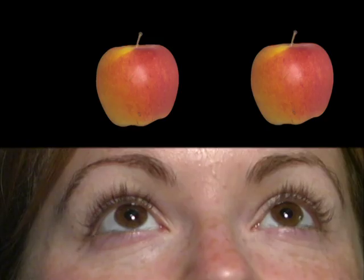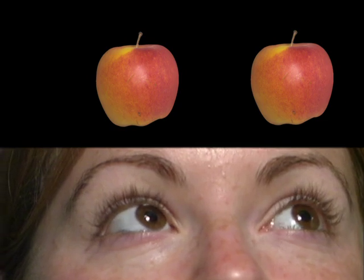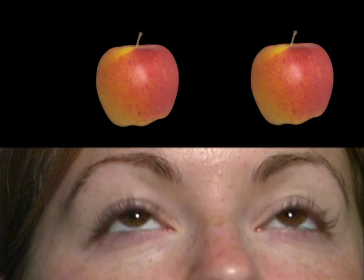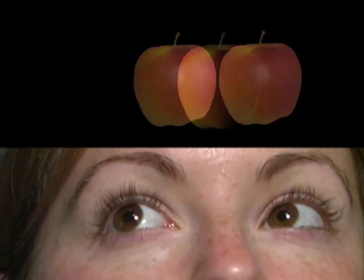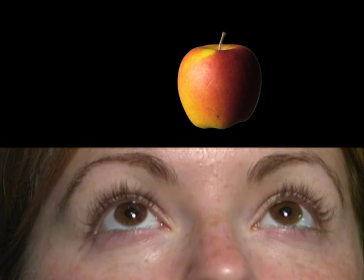To perceive an object in three dimensions, you must see two images, one in each eye. Also, each image must be viewed at a slightly different angle. Your brain then merges these two images into one image that has depth.